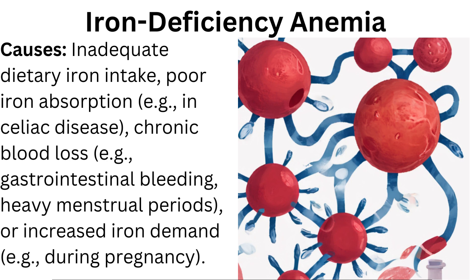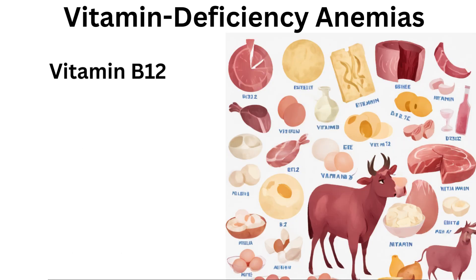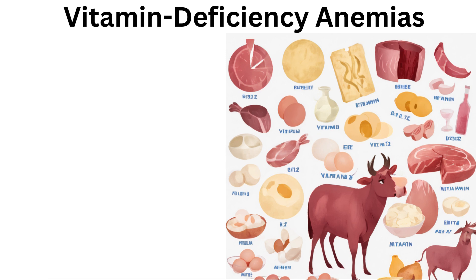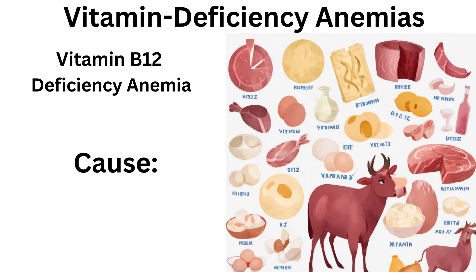Additional causes of iron deficiency anemia include chronic blood loss such as gastrointestinal bleeding, heavy menstrual periods, or increased iron demand during pregnancy. Vitamin B12 deficiency anemia is caused by insufficient dietary intake or impaired absorption of vitamin B12, which is crucial for red blood cell production.